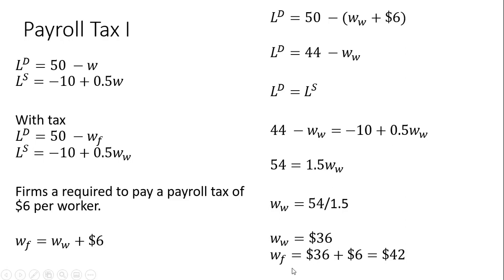And for the firm, the firm will pay workers $36. But then the firm has to pay the government $6 for each worker hired. So on an after-tax basis, the firm is now paying $42 for labor.